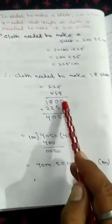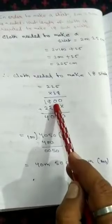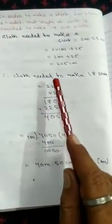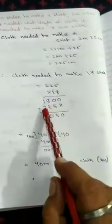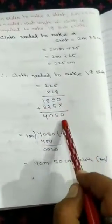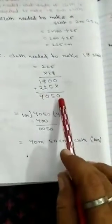That is 8, 5, 0, 40, carry 4, 8, 2, that's 16, plus 4, that is 20, 0, carry 2, 8, 2, that's 16, plus 2, that is 18. Again, you multiply by 1, 225, you will get 225. And then you add, you will get 4050. Now this much centimeter cloth is needed.